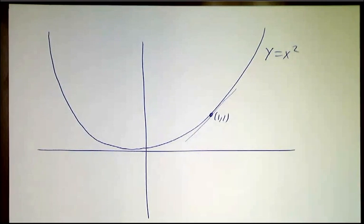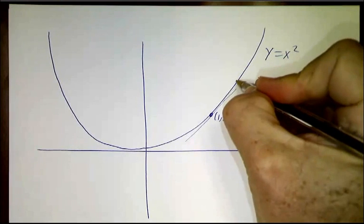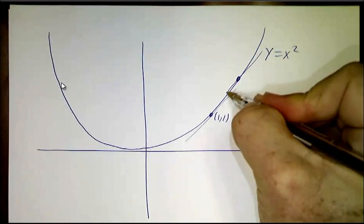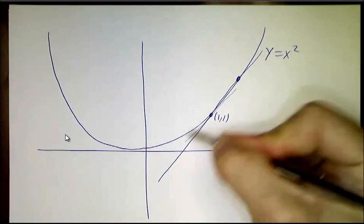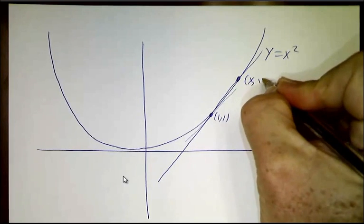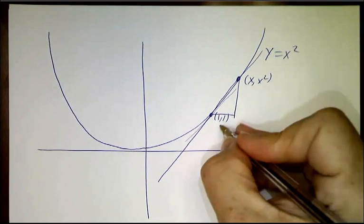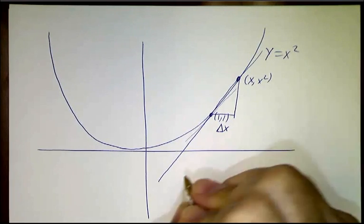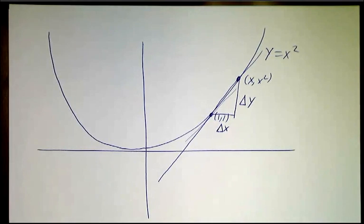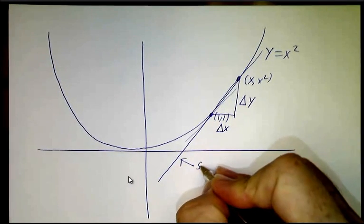And you want to know what is the slope of that line. So you need two points to determine a line and we've only got one point. So what we're going to do is we're going to take a nearby point over here and draw the straight line there. Now the straight line cuts across. So this is a point (x, x squared). And we can figure out how much x has changed – we'll call that delta x. We'll figure out how much y has changed – we'll call it delta y. And this is not called a tangent line, this is called a secant line.